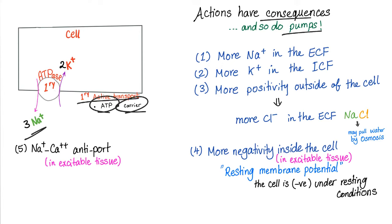You should memorize extracellular concentrations because when we draw blood from a patient we draw from plasma, which is part of the ECF. Here is the rule of fours: normal serum sodium = 140 mEq/L, chloride = 104, potassium = 4, bicarbonate = 24, and pH = 7.4.